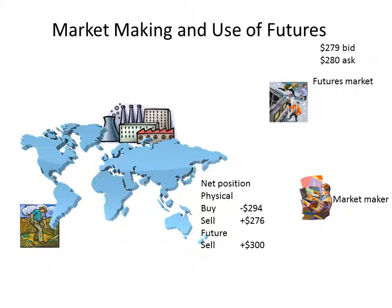The manufacturer decides to buy from the market maker, so the market maker sells at 276. Because the market maker no longer needs the futures contract, he buys back futures in the futures market at 280. The market maker now has no net position — he has bought and sold physical, and bought and sold futures at the respective prices. On the physical side: he paid 294 and received 276, resulting in a loss of $18. On the futures side: he sold at 300 and bought at 280, making a futures profit of $20.